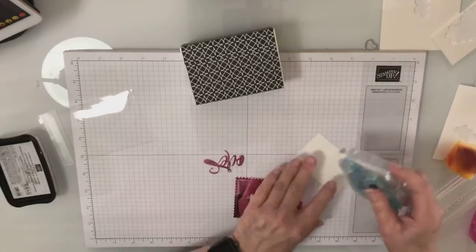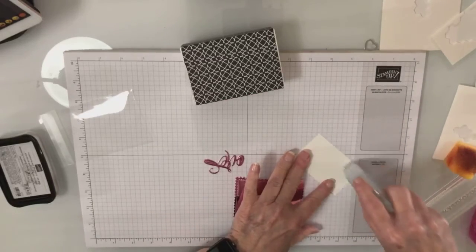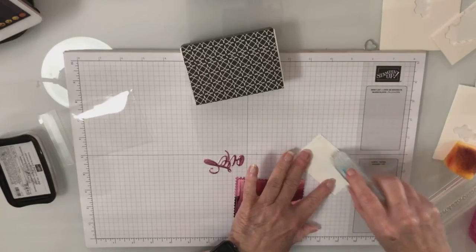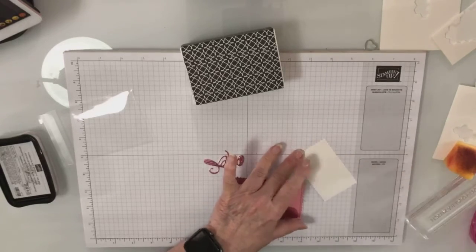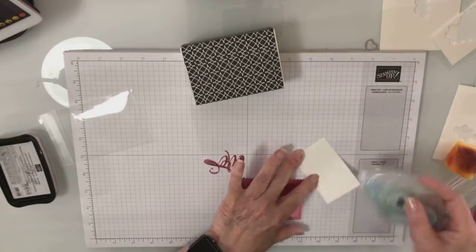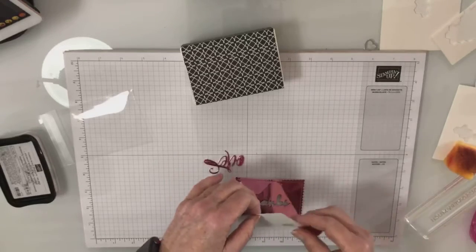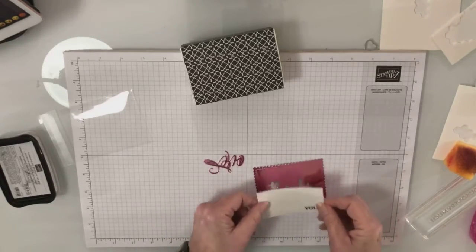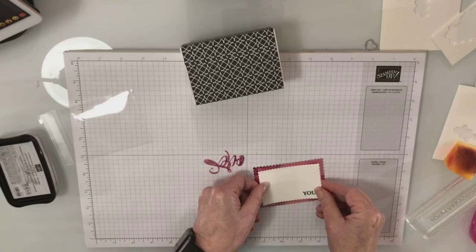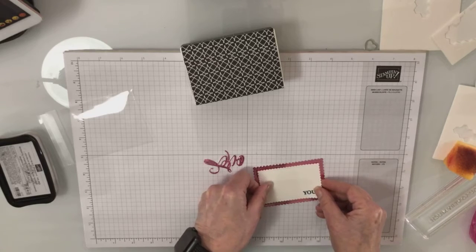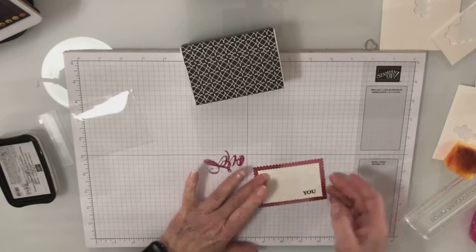Then I'm just going to glue this onto my box or onto that foil. The foil is part of the packet that coordinates with this whole suite. It's got three beautiful colors of foil in it.